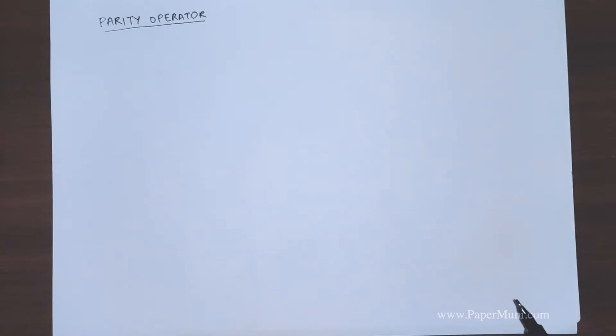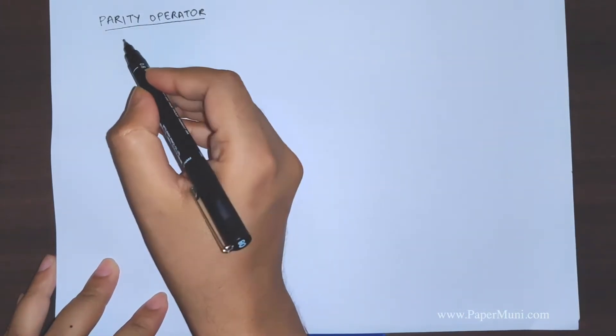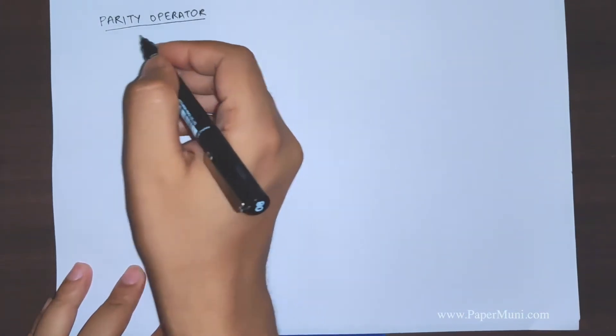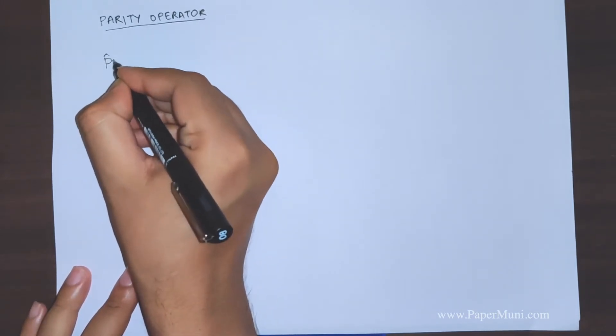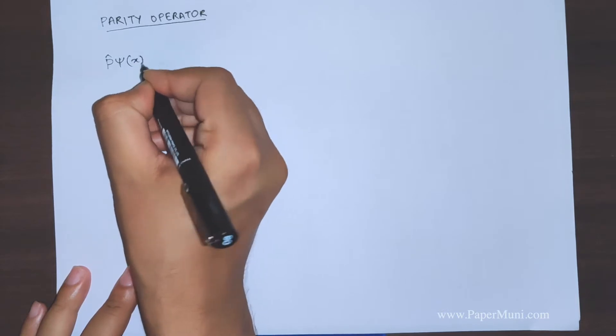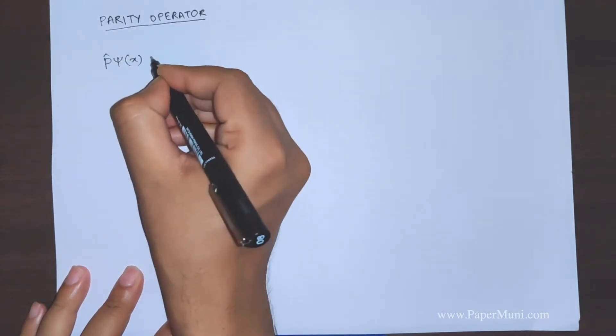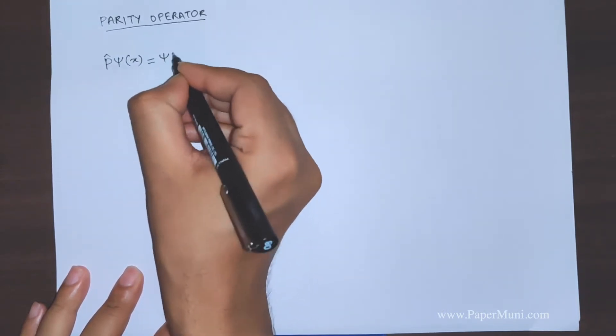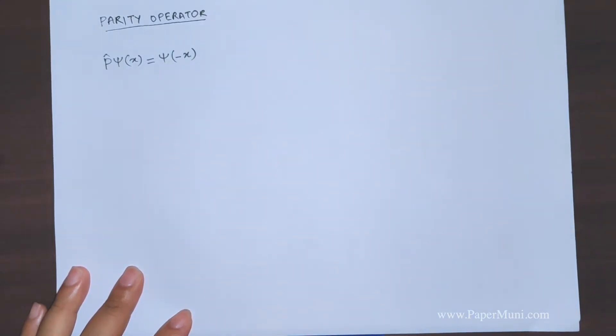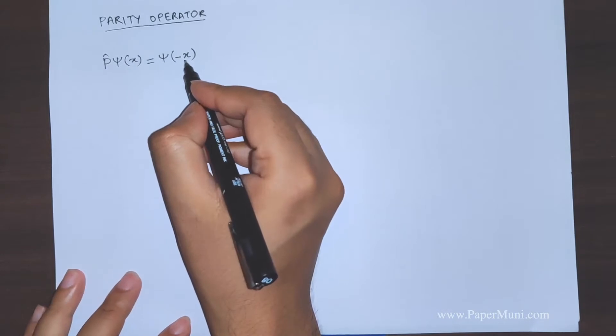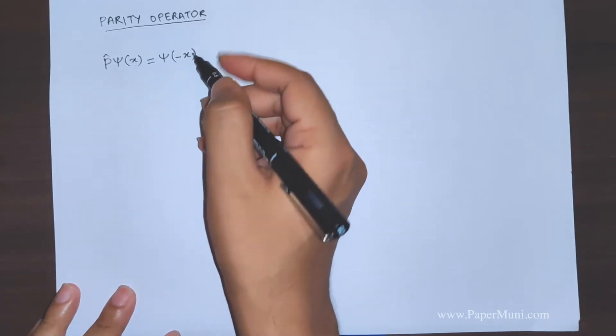Hello everyone, welcome to another lecture of quantum mechanics. Today we'll discuss parity operator. When the parity operator operates on a wave function, say in 1D, it introduces space inversion - you have to replace x by minus x.